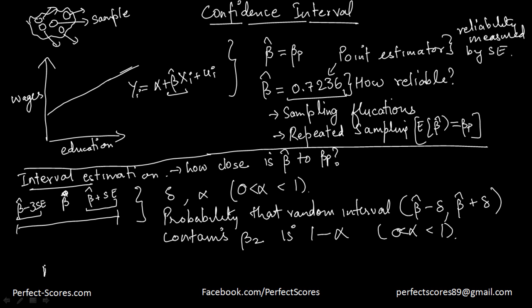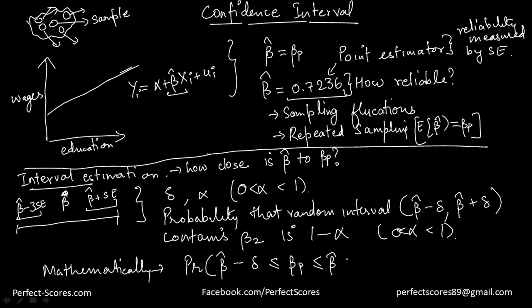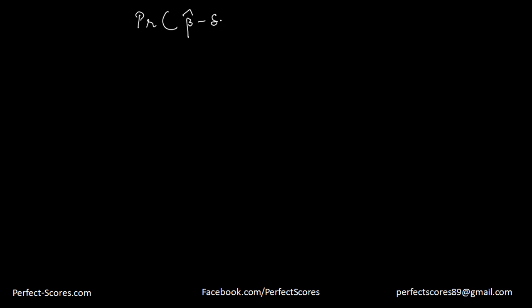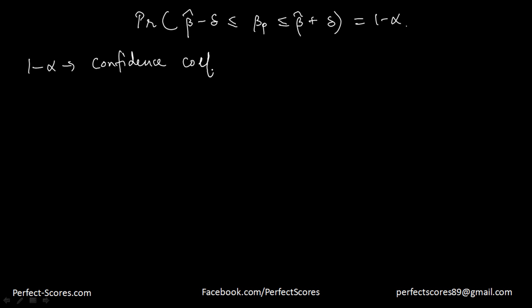Mathematically, the confidence interval is the probability that the actual population parameter is between these two values, which equals 1 minus alpha. This is what we call the confidence interval. And 1 minus alpha is known as the confidence coefficient.